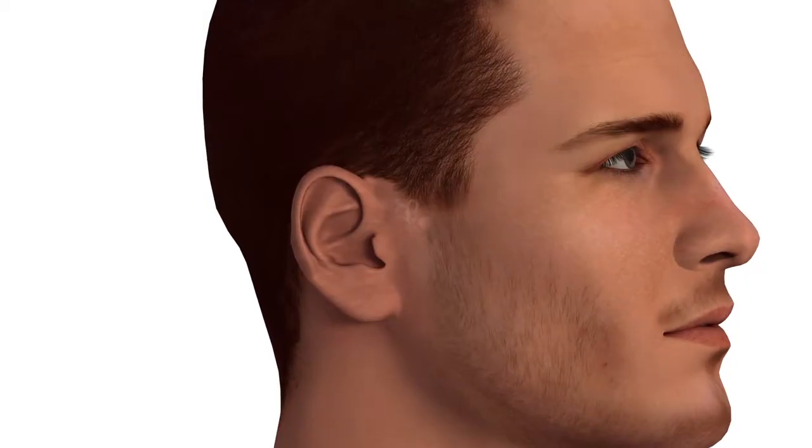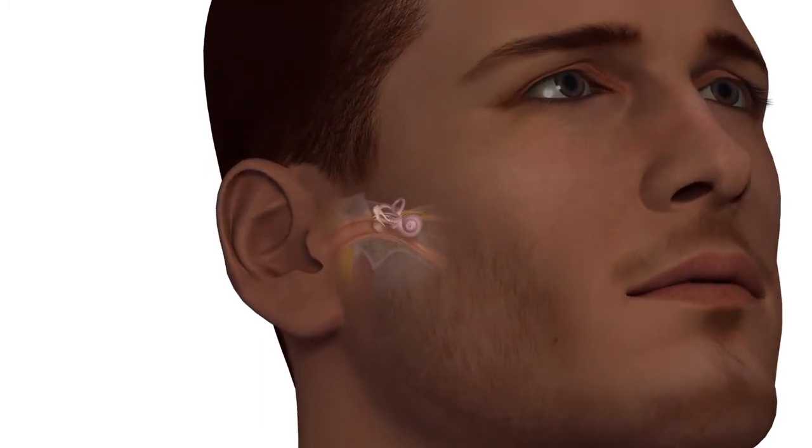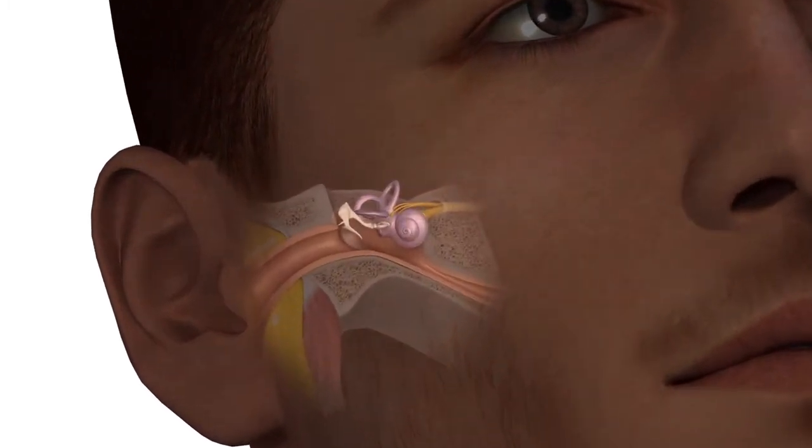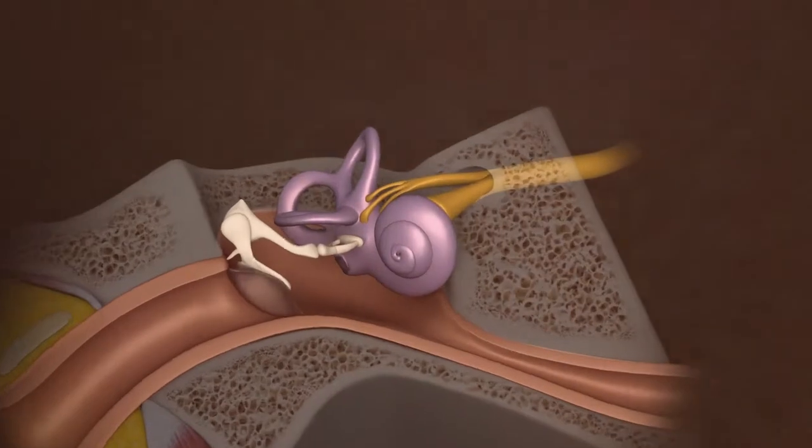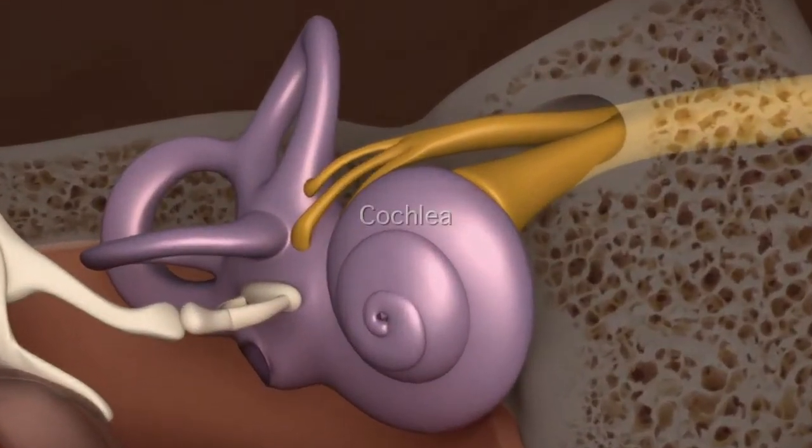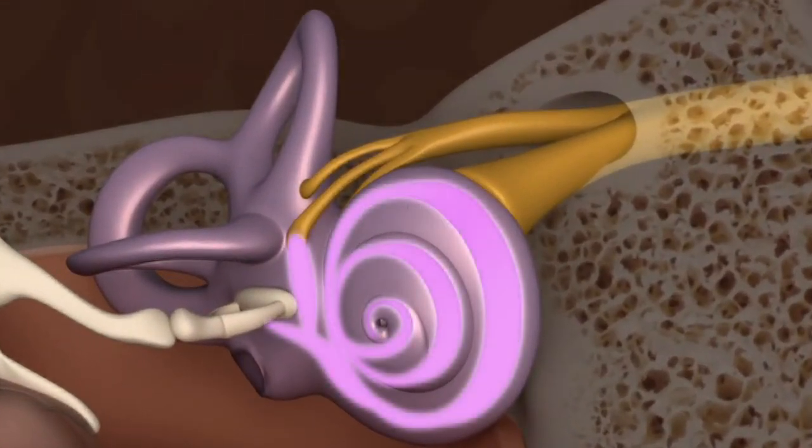The inner ear is difficult to treat because it is protected by the skull and by largely impermeable blood vessel walls. This limits the passage of most drugs from the blood into the cochlea.